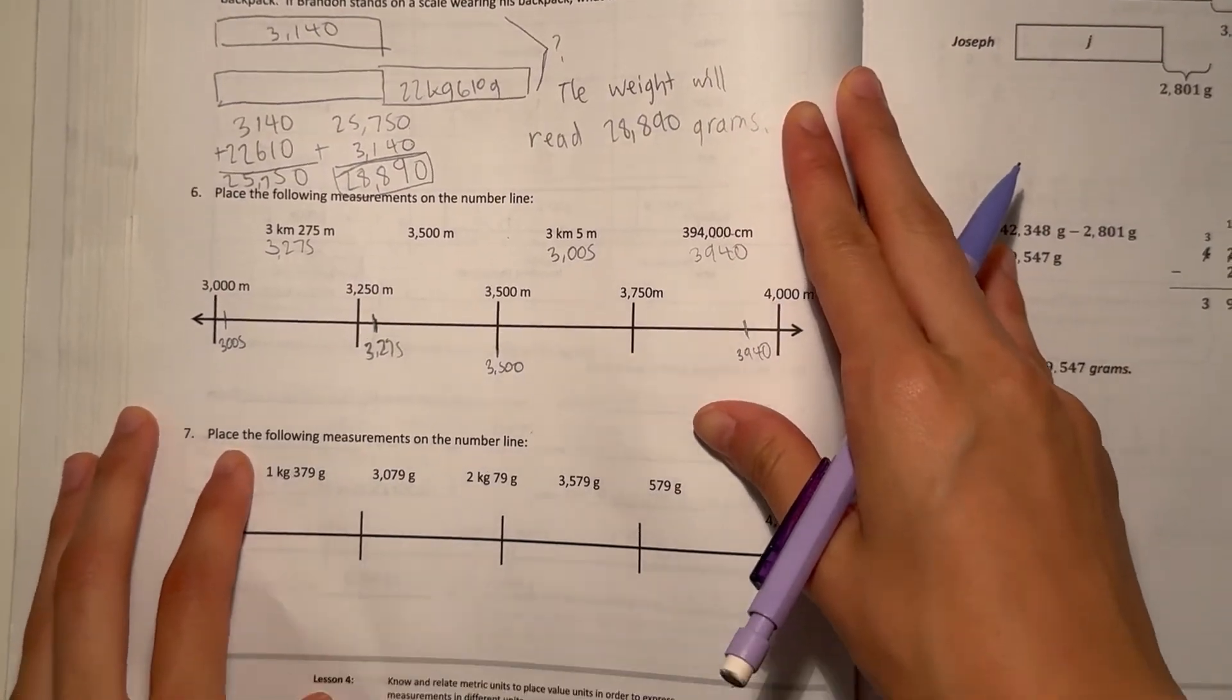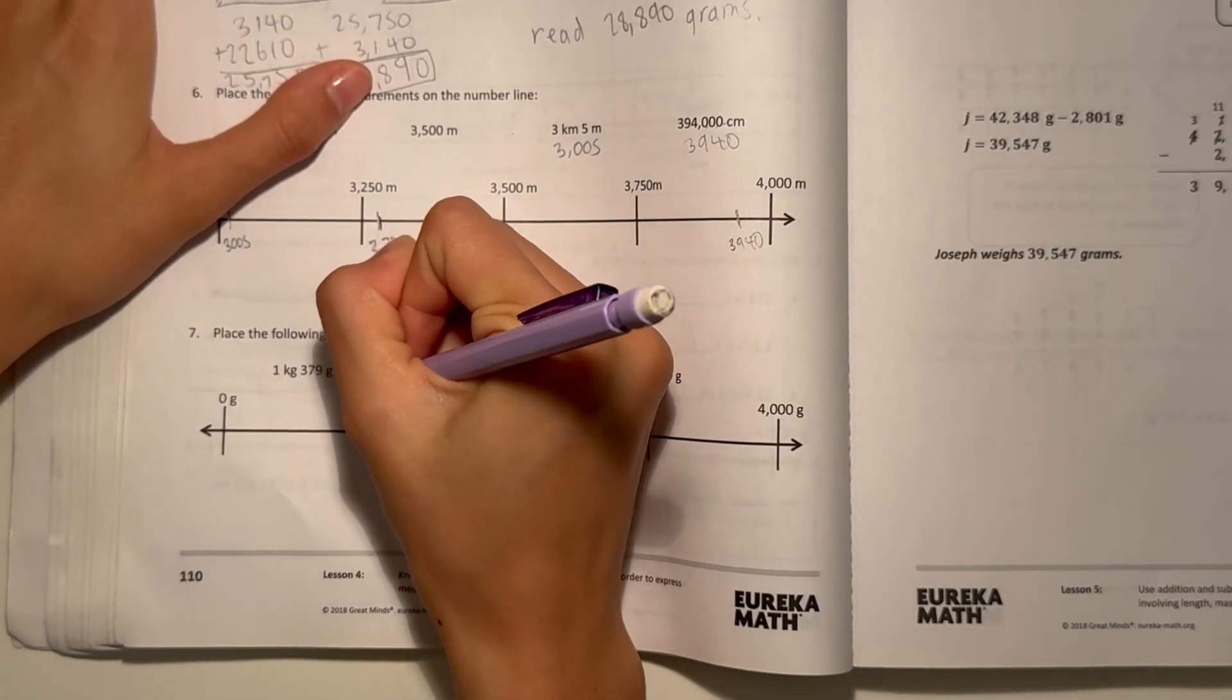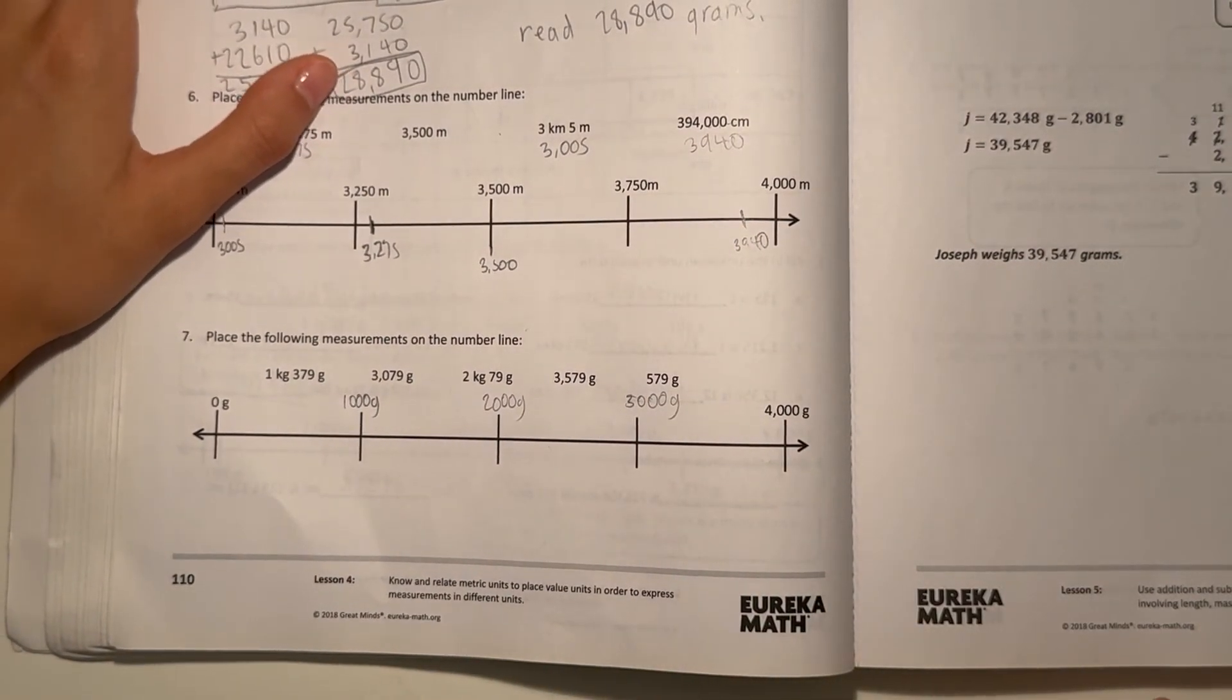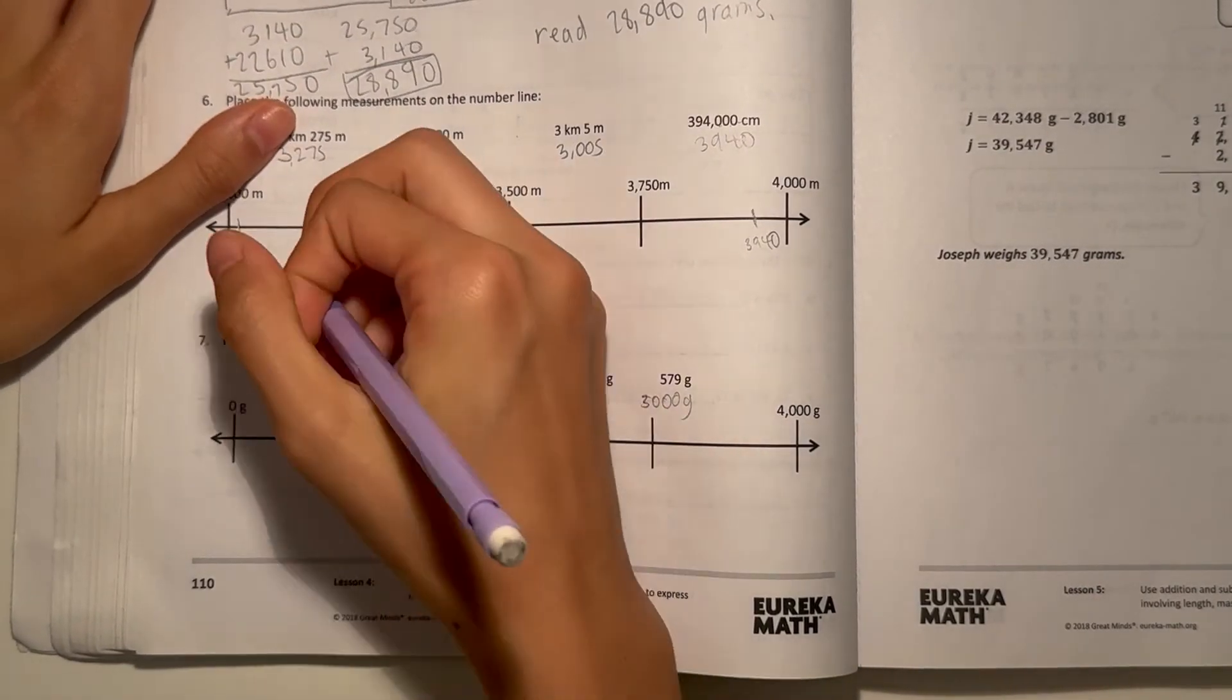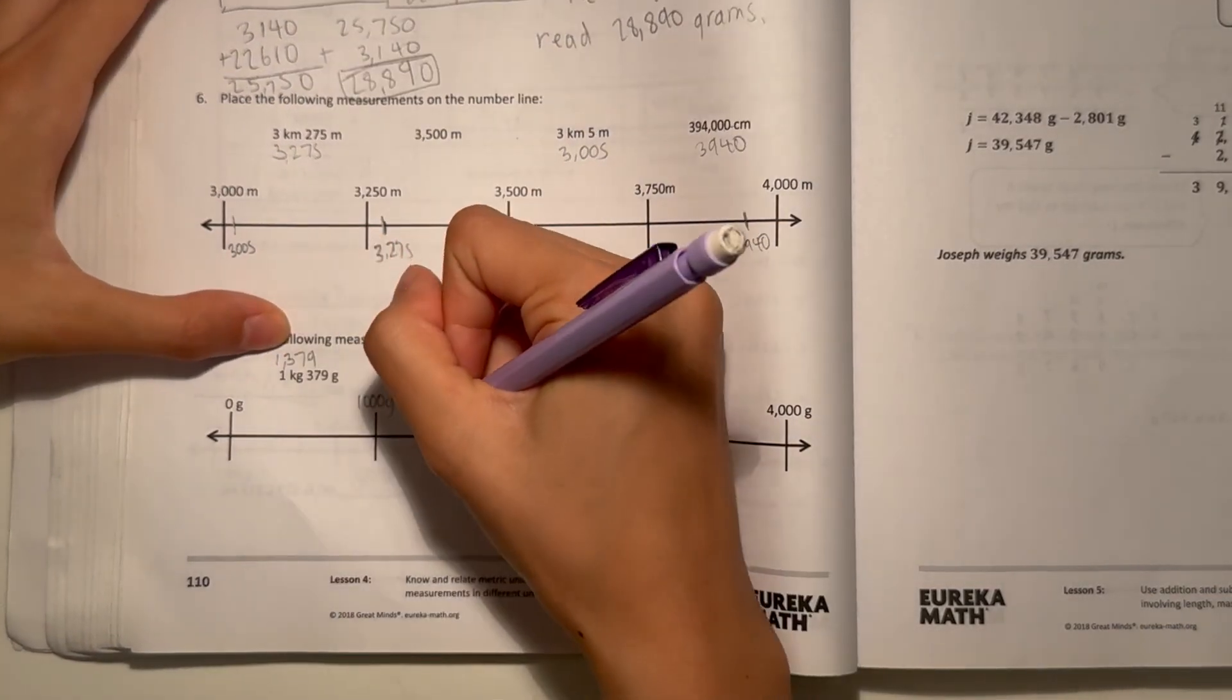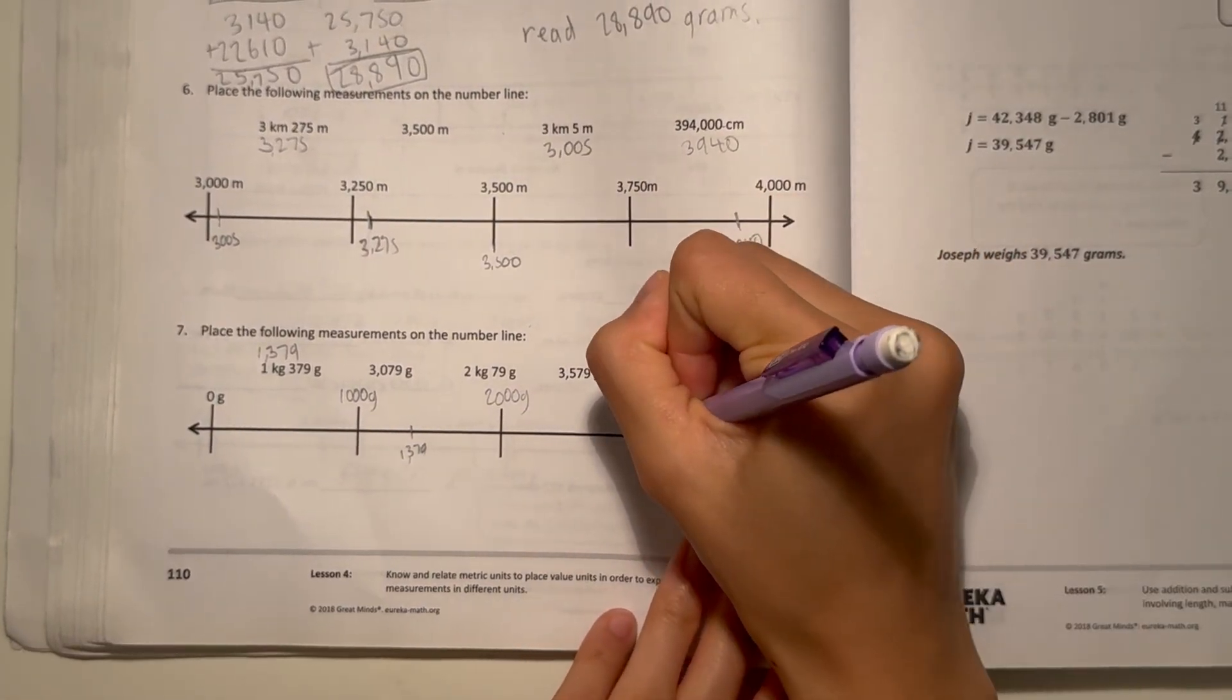Alright, and now number 7. Place the following measurements on the number line again. So now we have to label the number line first. So it goes from 0 to 4,000. Then this must be 1,000 grams, 2,000 grams, and 3,000 grams. We know there's 1,000 grams in a kilogram. So 1 kilogram times 1,000, it would be 1,000, and then 379 grams, since that's already in grams form. This number would go around over here. And now 3,079 grams is already converted into grams, so that would go right over here.